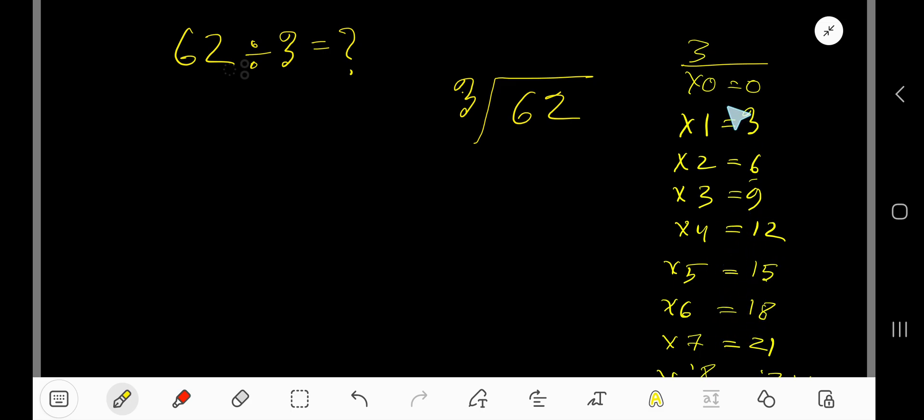3 times 6 is 18. To find out the multiplication table of 3, just add 3 with the previous step: 0 plus 3 is 3, 3 plus 3 is 6, 6 plus 3 is 9, 9 plus 3 is 12, 12 plus 3 is 15, 15 plus 3 is 18.